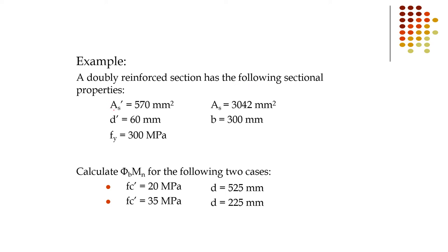Example 1: A doubly reinforced section has the following properties — As-dash (compression steel area) = 570 mm², As (tension steel area) = 3042 mm², d-dash = 60 mm, b = 300 mm, fy = 300 MPa. Calculate the moment capacity for two cases: Case 1 — fc-prime = 20 MPa and effective depth d = 525 mm; Case 2 — fc-prime = 35 MPa and effective depth d = 225 mm.